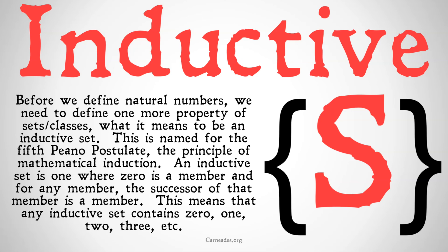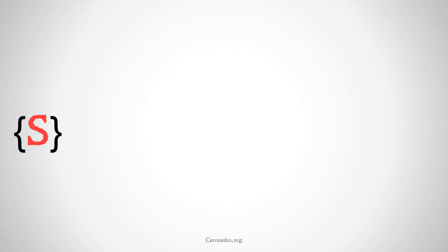This is named for the fifth Peano postulate, the principle of mathematical induction. An inductive set is one where zero is a member and for any member, the successor of that member is also a member. This means that any inductive set contains zero, one, two, three, etc., because it contains zero and every successor of any member in that set — meaning every successor of zero — therefore all the natural numbers.